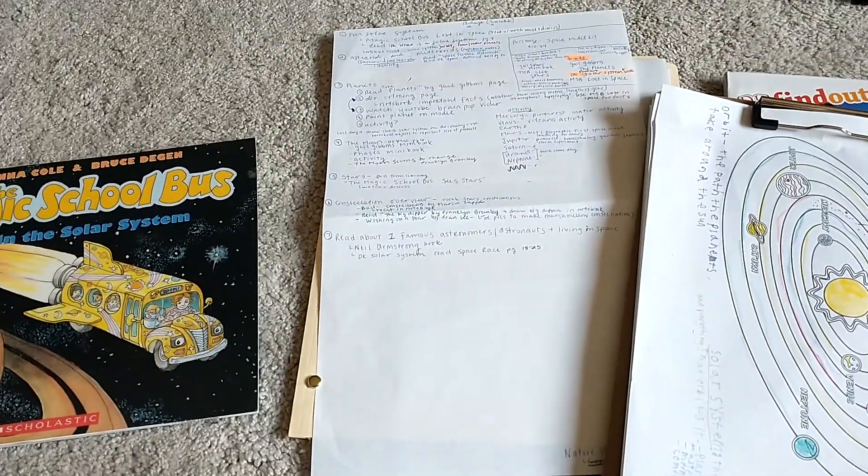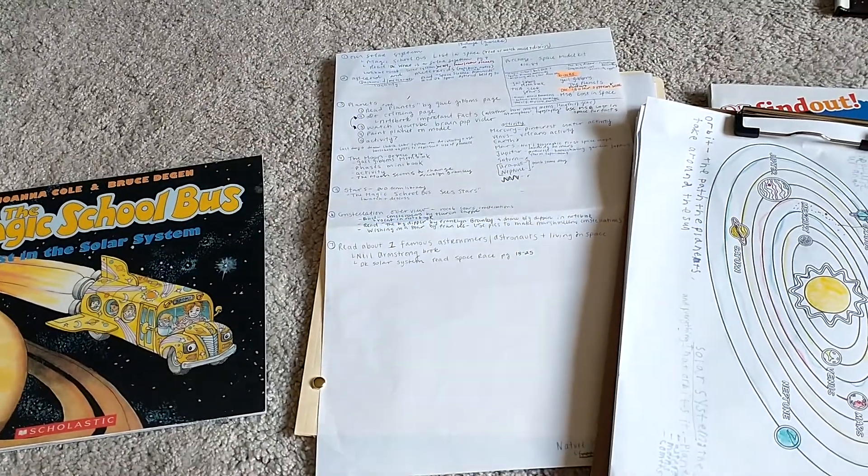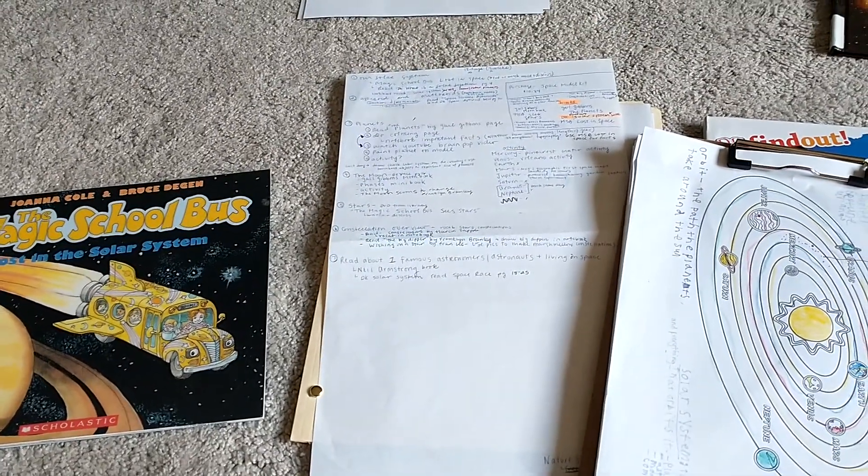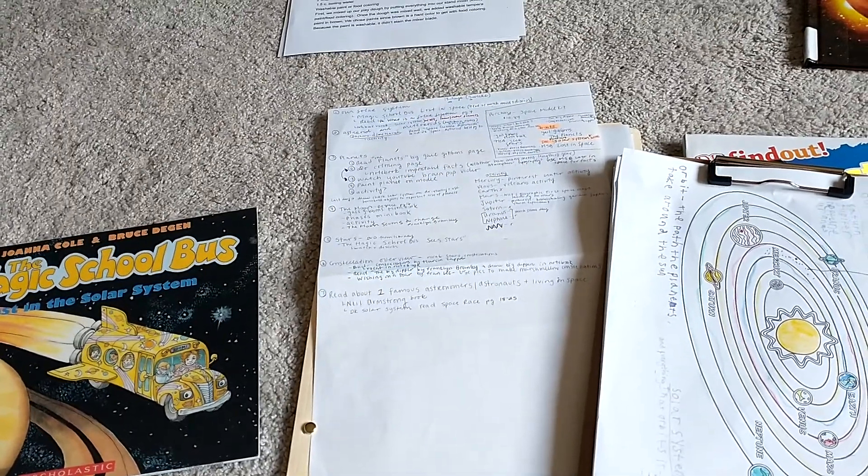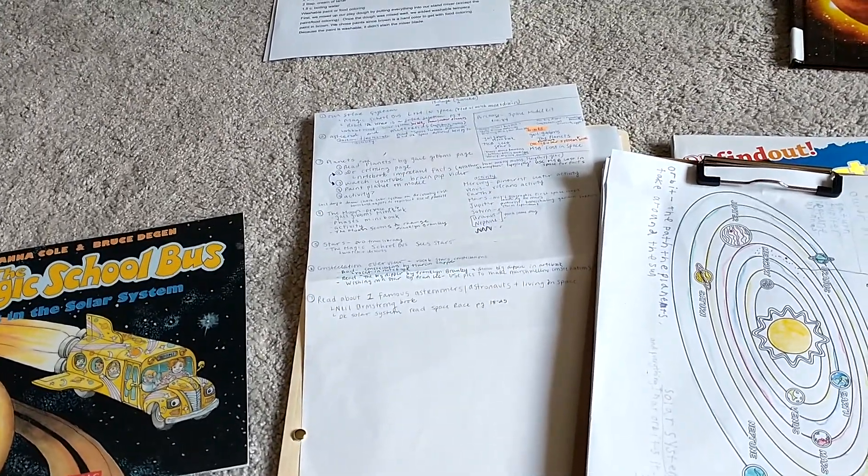So for Mercury, I went on to Pinterest and I found projects for each planet. So for Mercury, we created craters in flour. We were throwing chocolate chips at different angles into flour to make craters.